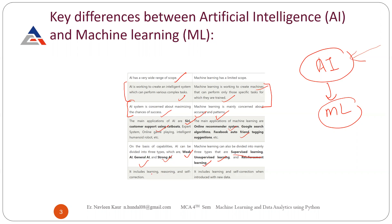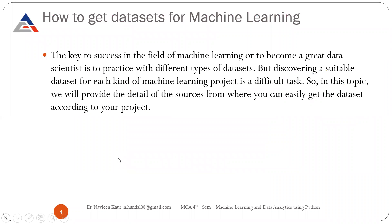In the case of AI, it includes learning, reasoning, and self-correction. There are rules that you feed it; on the basis of those rules it develops reasoning so that it can predict the output, and whenever required, it has the capability to correct itself. In machine learning, it includes learning and self-correction when introduced with new data, but reasoning capabilities are not available — it is always learning and correcting itself.